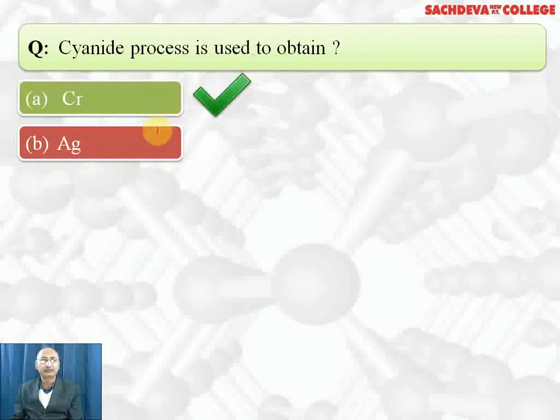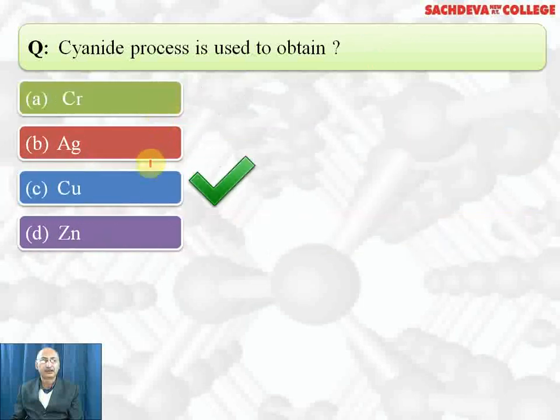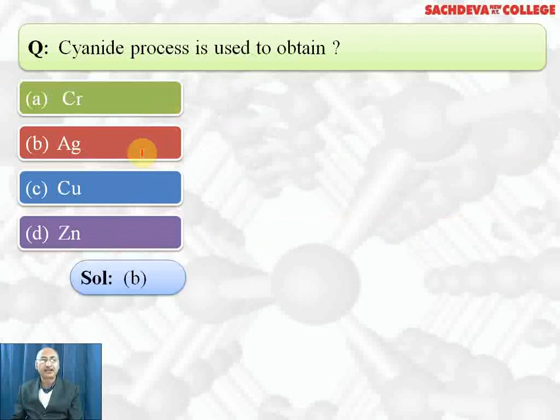Correct answer is silver. It is used for silver as well as gold. In these options silver is the correct answer. So first we take silver ore with potassium cyanide or sodium cyanide, a complex is formed which is reduced with zinc metal to get silver.